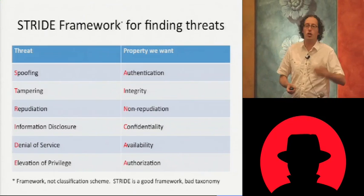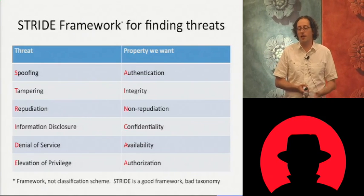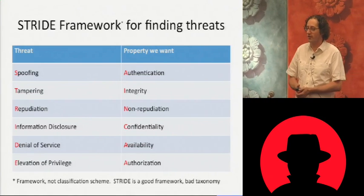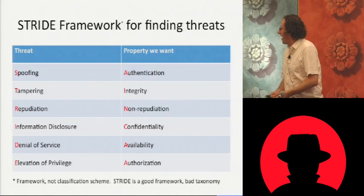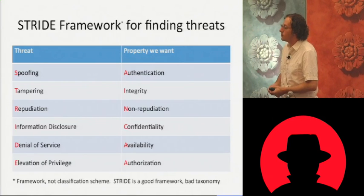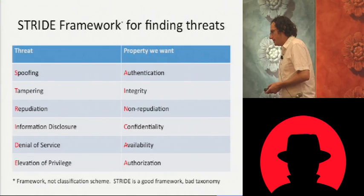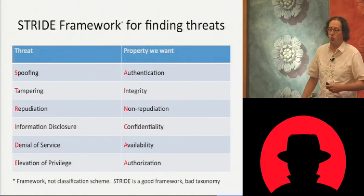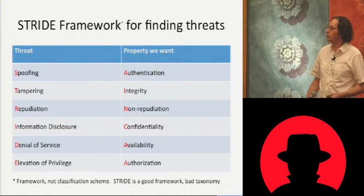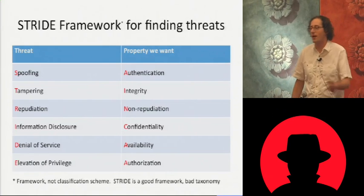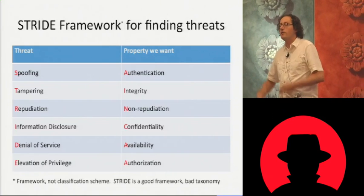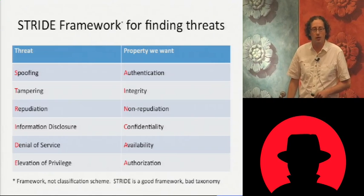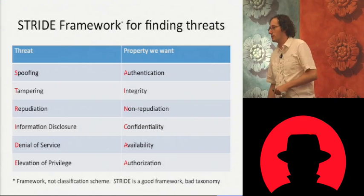The STRIDE framework — STRIDE is an acronym standing for Spoofing, Tampering, Repudiation, Information Disclosure, Denial of Service, and Elevation of Privilege. These are the opposite of properties that we want. It's a great framework for thinking about what goes wrong — how is someone going to spoof this, how is someone going to tamper with this? This can help you remember the sorts of things you want to go through as you're looking at a system.